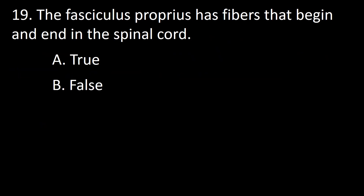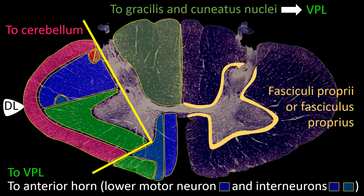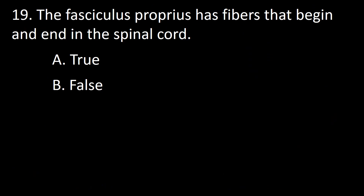Next question: the fasciculi proprii has fibers that begin and end in the spinal cord — true or false? The fasciculi proprii consists of fibers interconnecting spinal segments — so the answer is true.